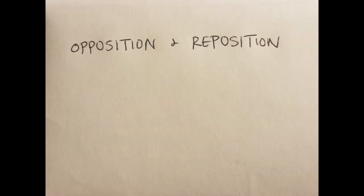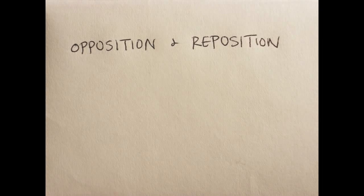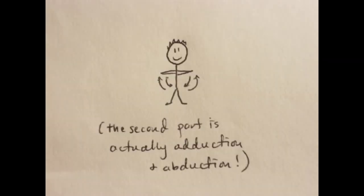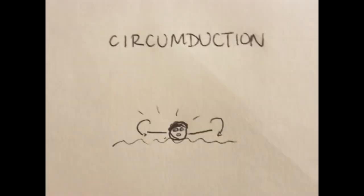Poke. There's opposition and reposition, like what you do with your hands during the second part of the chicken dance. And there's circumduction, like when you're doing the butterfly stroke.